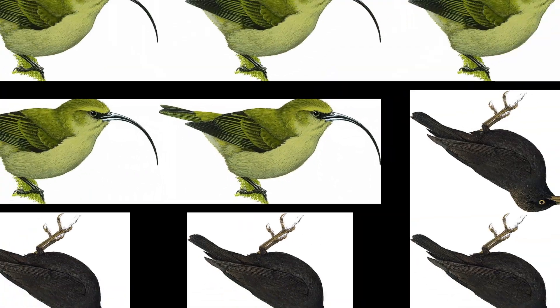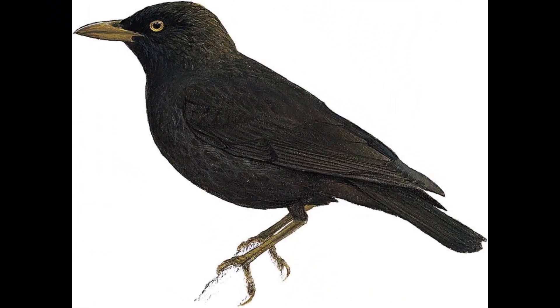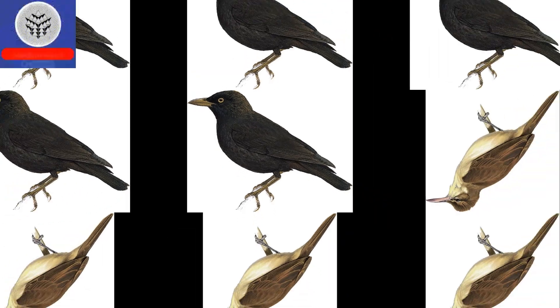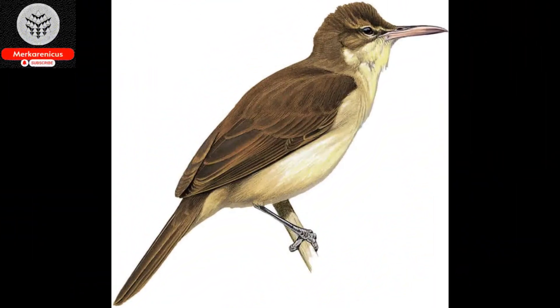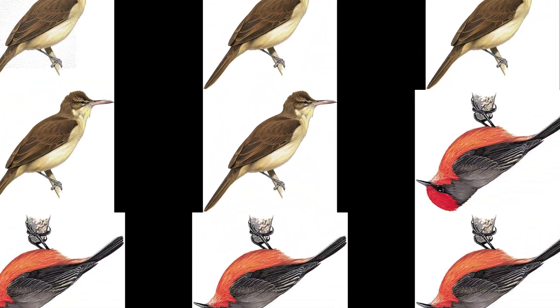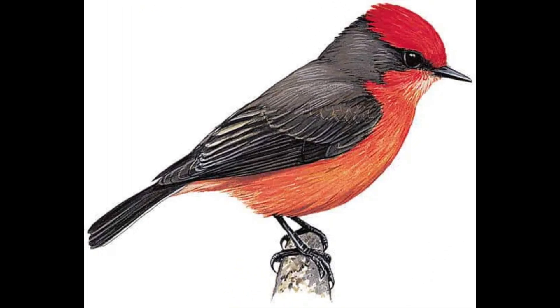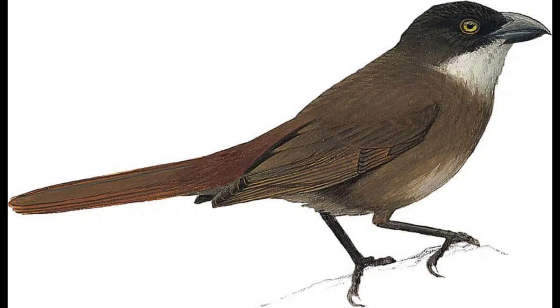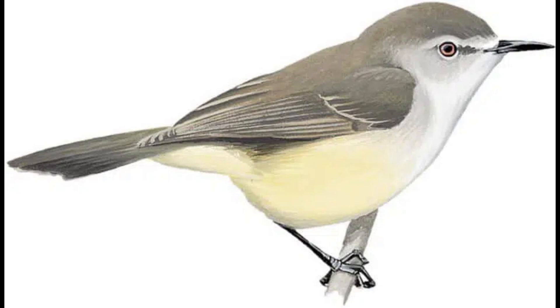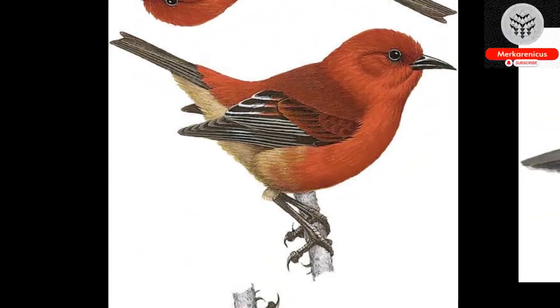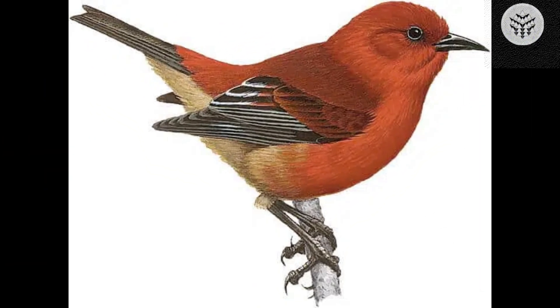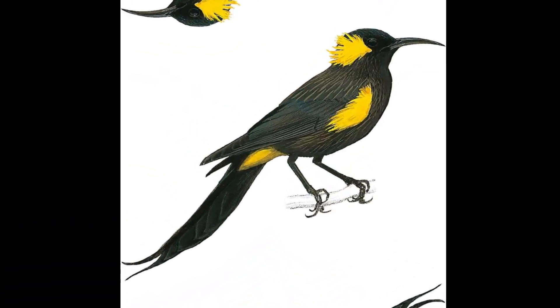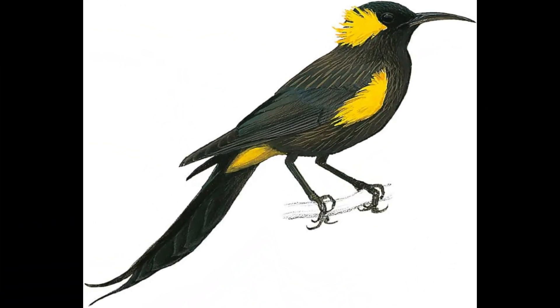Today's video centers on a recent study conducted by the University of Birmingham which indicates that human-induced bird extinctions over the past 130,000 years have resulted in a considerable decline in avian functional diversity and an approximate loss of 3 billion years of unique evolutionary history. With no fewer than 600 bird species having become extinct, the research underscores the essential ecological functions that birds fulfill, including pest control and pollination.